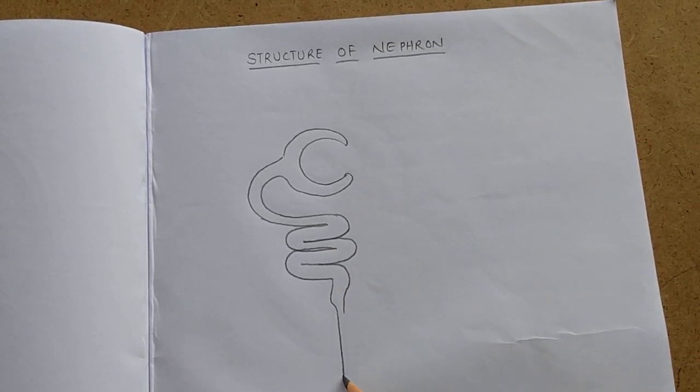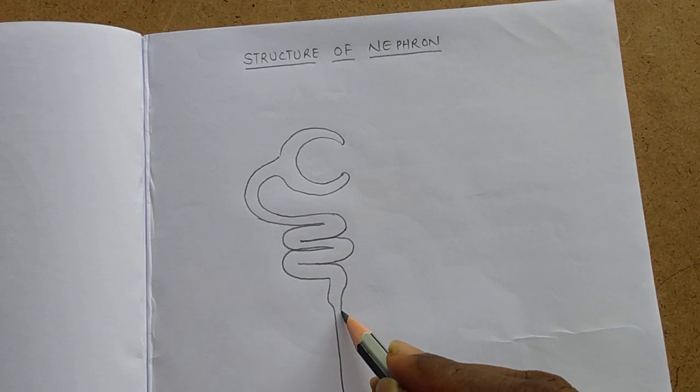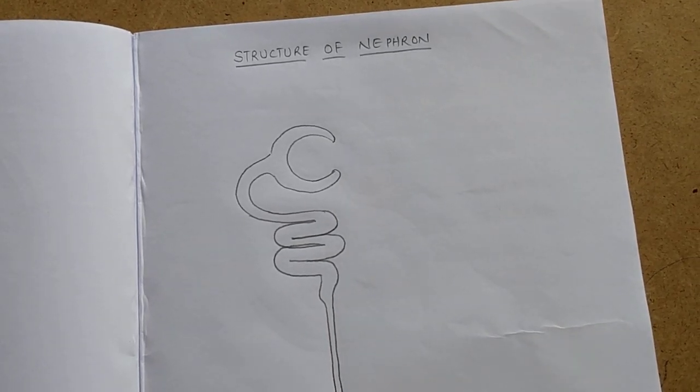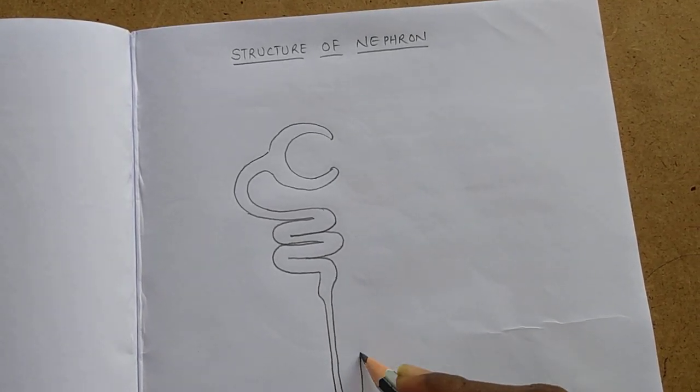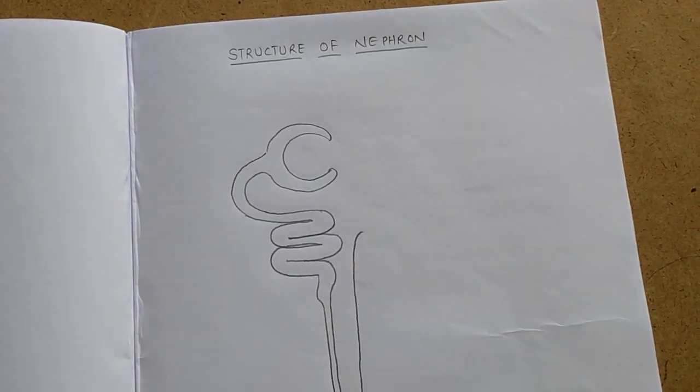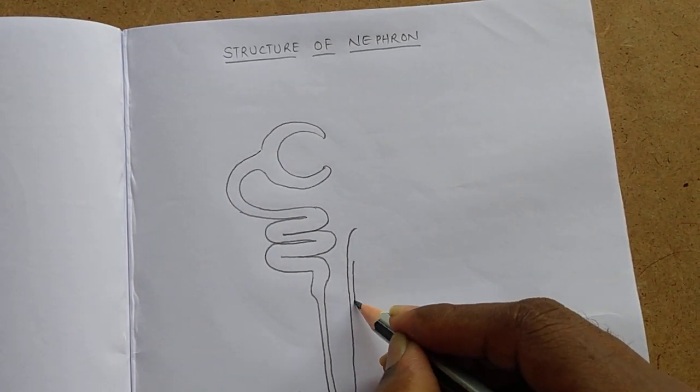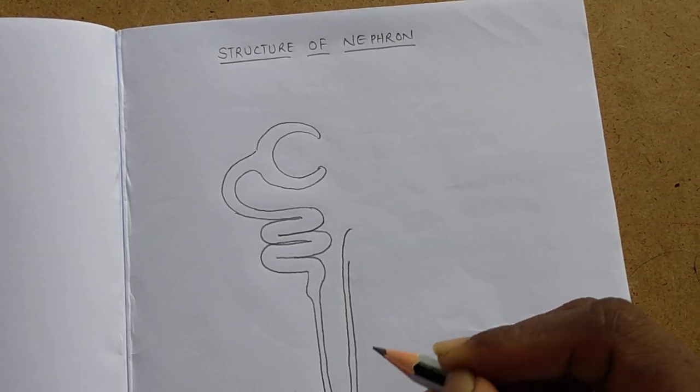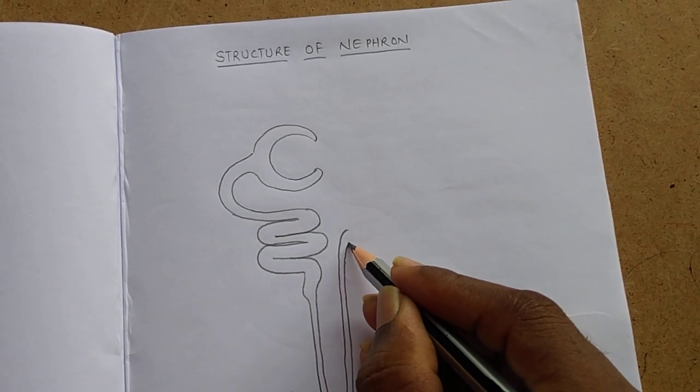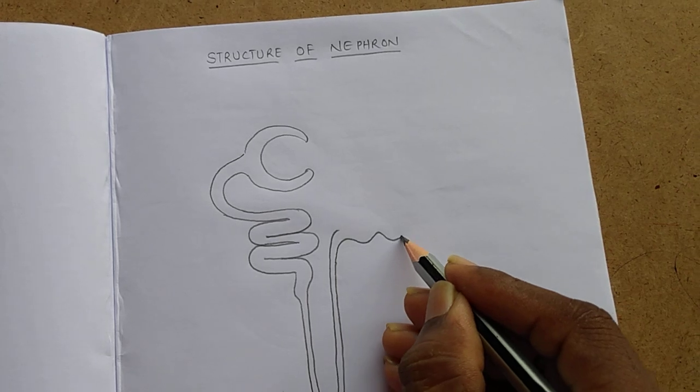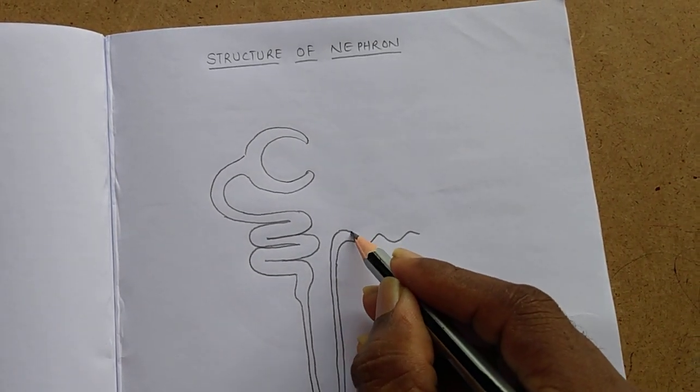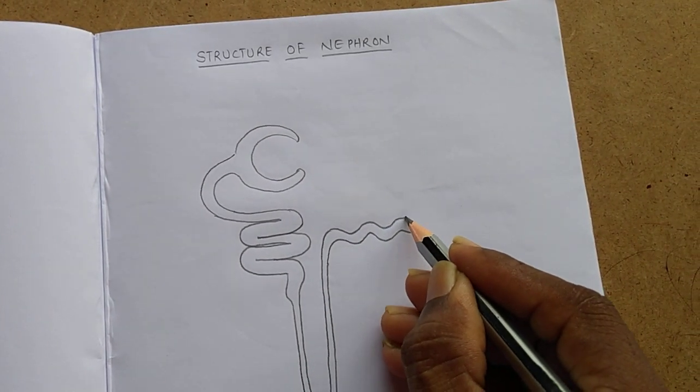And from here, we have to draw the loop of Henle as a narrowed tube, and here we have to draw the distal convoluted tubule.